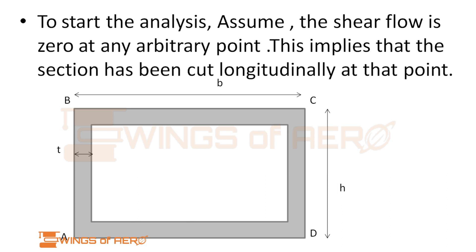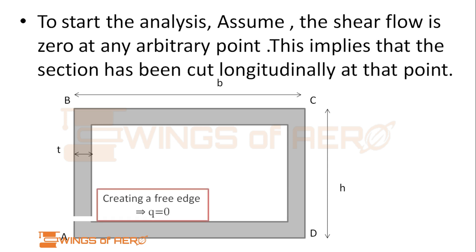To start the analysis, assume the shear flow is 0 at any arbitrary point. This implies that the section has been cut longitudinally at that point. As you can see, I have assumed the cut near point A, thus creating a free edge where q equals 0.